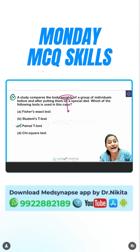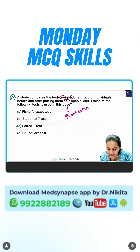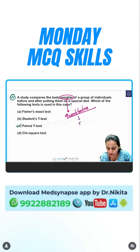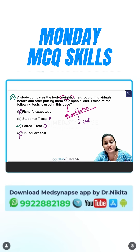Weight has units — 10 kgs, 20 kgs, 30 kgs — so this is quantitative data. For quantitative data, you use the t-test, so it is either option B or option C. You rule out option A and option D.